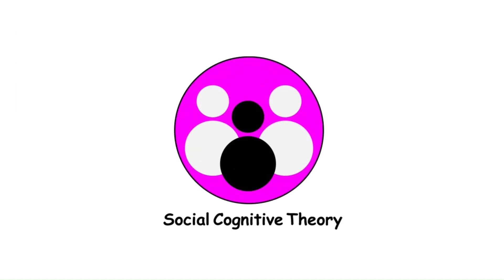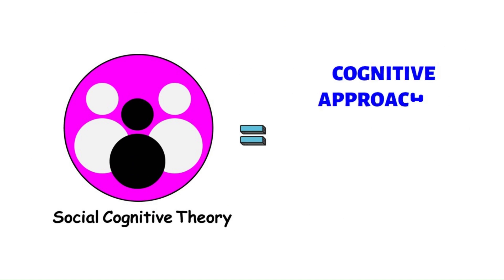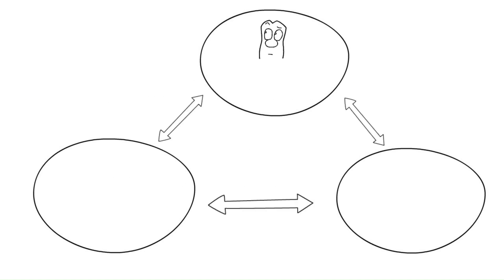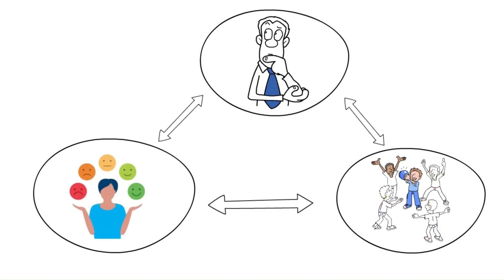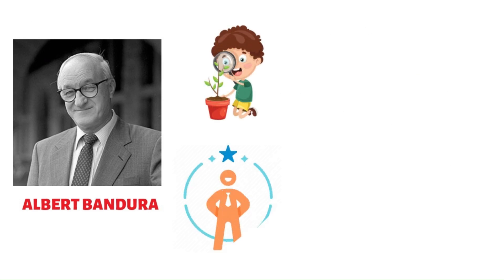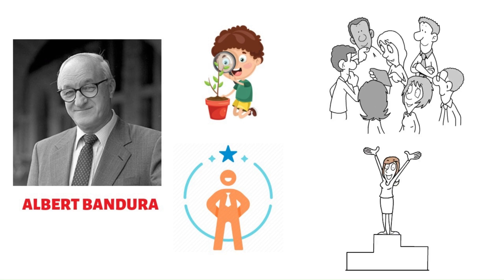Social Cognitive Theory integrates cognitive and behavioral approaches, emphasizing the reciprocal interaction between individuals, their behaviors, and their environments. Albert Bandura introduced concepts like observational learning and self-efficacy, suggesting that personality develops through social learning experiences and the beliefs individuals hold about their ability to succeed.